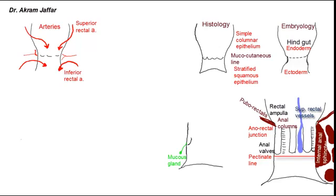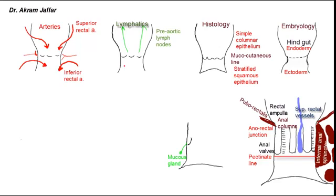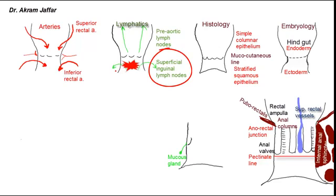The lymphatics follow the blood supply. Lymphatic vessels from the upper part of the anal canal drain together with the inferior rectal vessels into the inferior mesenteric and then to the pre-aortic lymph nodes. Lymphatics from the lower part of the anal canal drain with the perineum to the superficial inguinal lymph nodes, and hence into the external iliac, common iliac, and para-aortic lymph nodes. Thus, an infected ulcer or tumor affecting the lower part of the anal canal is accompanied by enlargement of the superficial inguinal lymph nodes.